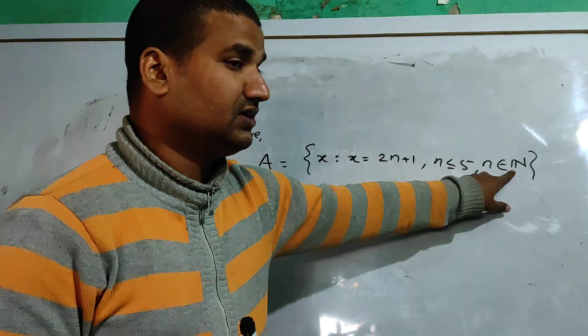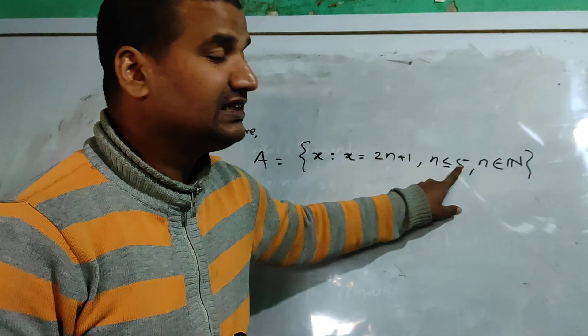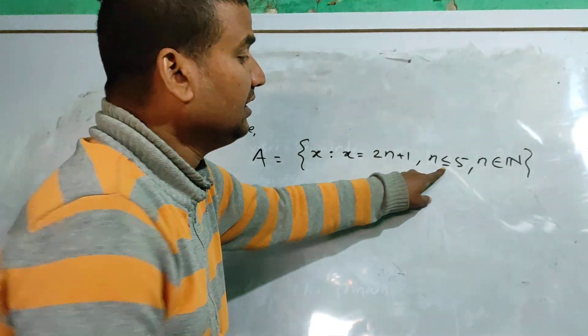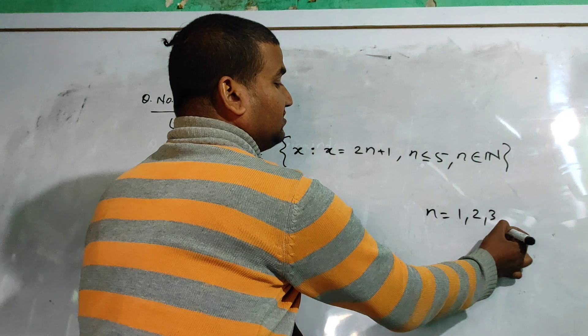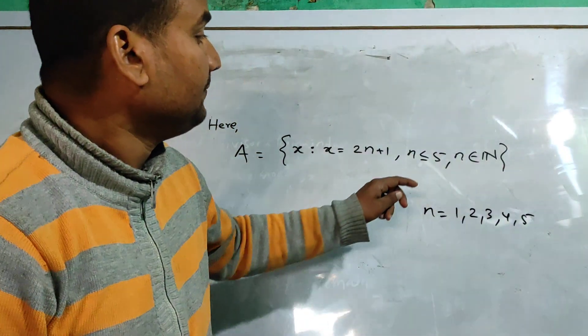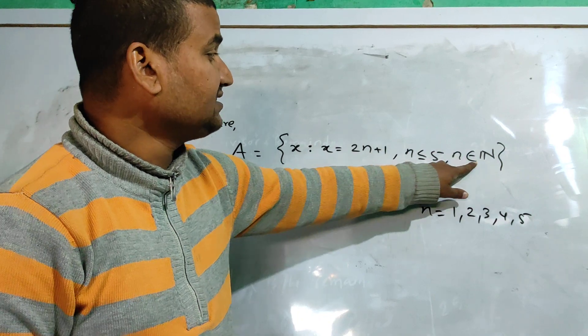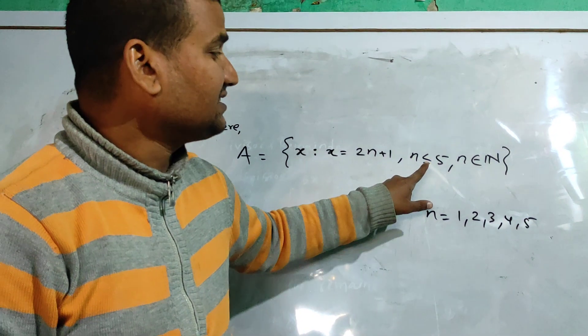N is a natural number. The first natural numbers with n less than or equal to 5 are 1, 2, 3, 4, 5. If you have a natural number, the limit is 5.